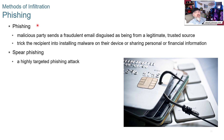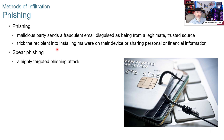Another method of infiltration is phishing — spelled P-H-I-S-H-I-N-G, but pronounced like fishing. A malicious party sends a fraudulent email disguised as being from a legitimate trusted source, designed to trick the recipient into installing malware or sharing personal or financial information. It's easy and cheap to do — bad actors buy bulk email lists and send to many people, needing only a small percentage to work to profit.